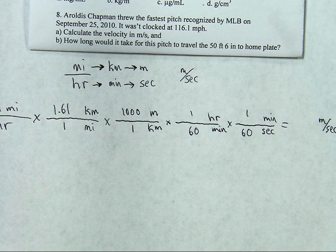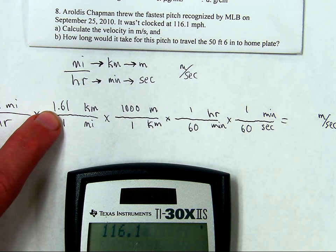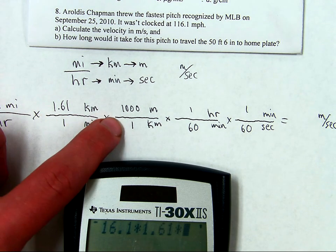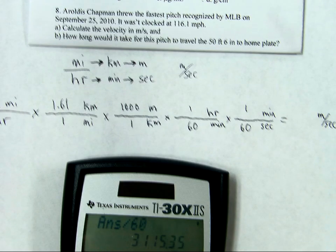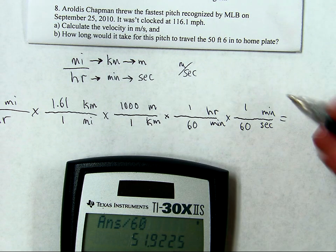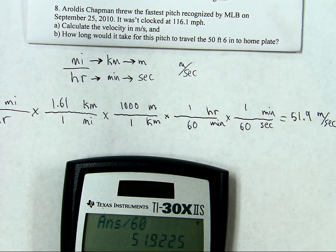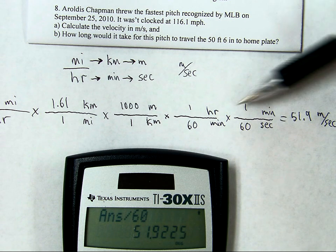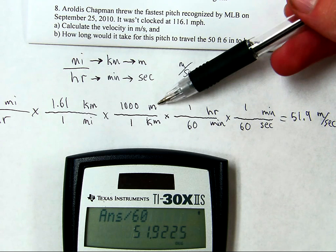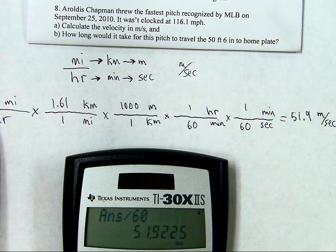So let's see what that looks like: 116.1 times 1.61 times 1,000, divided by 60, divided by 60 again, gives a final answer of 51.9 meters per second. How do I know to round that to 51.9? The 1,000, 60, and 60 have infinite significant figures because they are definitions. The 1.61 is rounded to three significant figures for convenience, and 116.1 has four significant figures — thus, three significant figures in the final answer for the first half of this question.